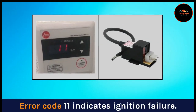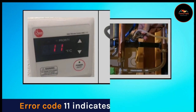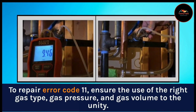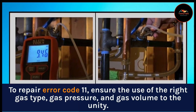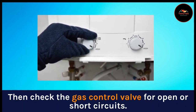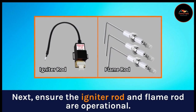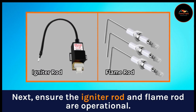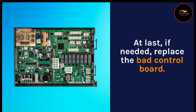Error code 11 indicates ignition failure. To repair error code 11, ensure the use of the right gas type, gas pressure, and gas volume to the unit. Then check the gas control valve for open or short circuits. Next, ensure the igniter rod and flame rod are operational. If needed, replace the bad control board.